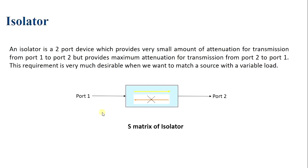For the S-matrix: port 1 and port 2 are both perfectly matched ports, so S11 and S22 are equal to 0. If we consider input at port 2 and output at port 1, we get total attenuation, so S12 equals 0. When we apply input at port 1 we get output at port 2, so S21 equals 1. This is the S-matrix of the two-port isolator.